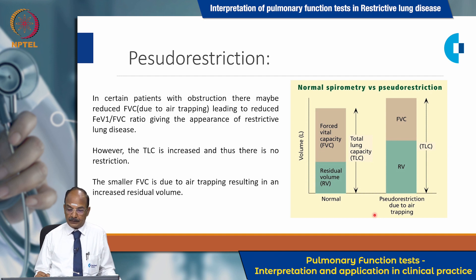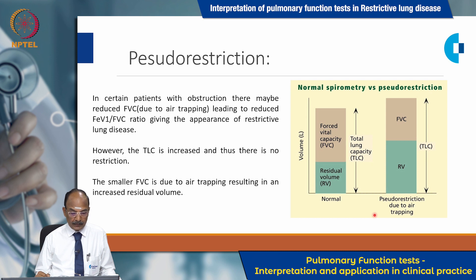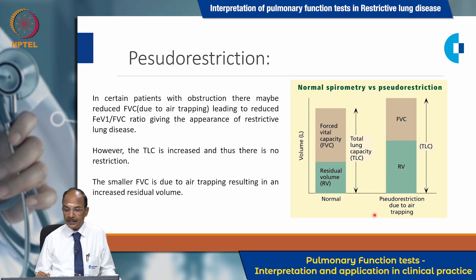What is pseudo-restriction? In certain patients with obstruction, there may be reduced FVC due to air trapping, leading to a reduced FEV1/FVC ratio giving the appearance of restrictive lung disease. However, TLC is increased and thus there is no true restriction. The smaller FVC is due to air trapping resulting in an increased residual volume, and we should be able to identify this condition when compared with normal spirometry.